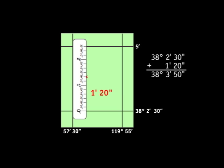In our example, the southern parallel has a latitude of north 38 degrees 2 minutes 30 seconds. So the latitude of our point is north 38 degrees 3 minutes 50 seconds.